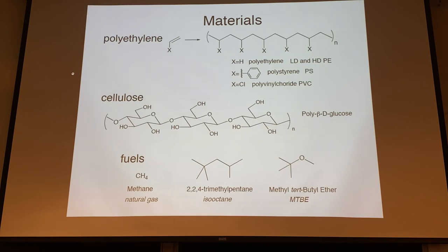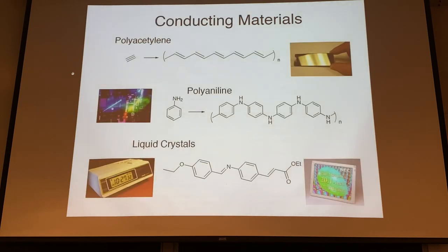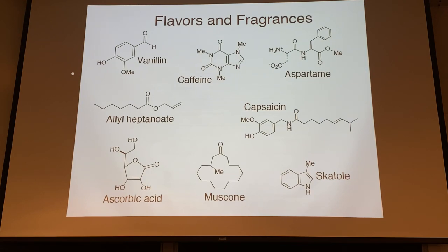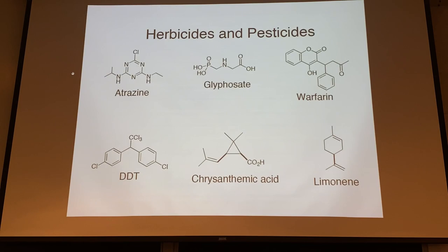Some material applications: cellulose we'll see later with sugar chemistry; conducting materials like polyacetylene have a metallic sheen due to delocalized electrons from the resonance effect; polyaniline; and liquid crystals, which form the basis of all the display screens we use on computers and watches - they change colors based on very weak electric fields.